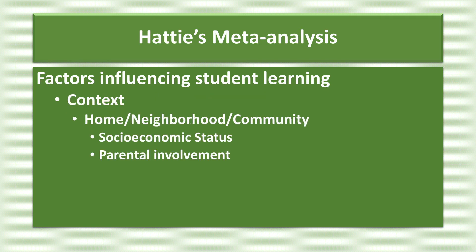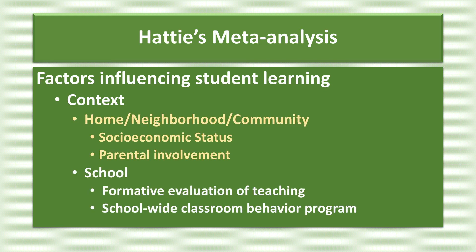In the context category, Hattie identified the socioeconomic status of the household and parental involvement as the most important factors. At the school level, Hattie identified 21 factors to be important. For example, he found that those schools who had implemented a formative evaluation of teaching as well as a school-wide program focused on classroom behavior had better student achievement.